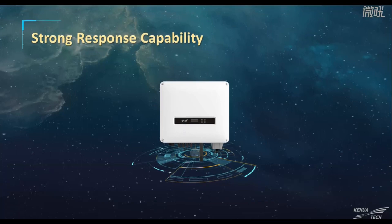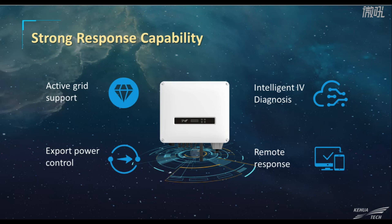The inverter has complete active grid support functions, which can automatically provide reactive power compensation, power limiting, and other grid support applications according to grid voltage and frequency. In combination with the cloud platform, it can realize PV string monitoring and intelligent IV curve scanning, helping to pinpoint abnormal strings and quickly diagnose system failures, reducing operational cost and difficulty. Inverter active response plus cloud platform helps release operations staff from time and location constraints, fully guaranteeing reliable, efficient, and intelligent operation and maintenance.